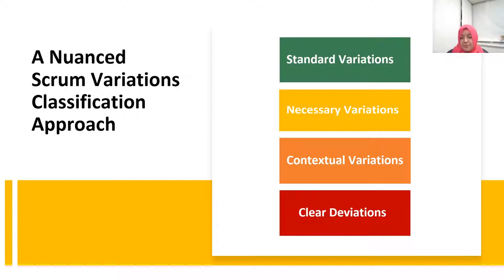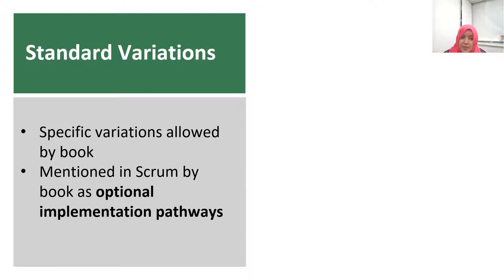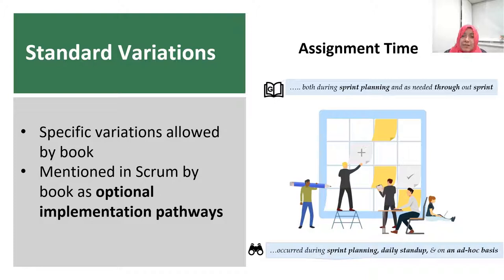Standard variations are specific variations allowed by the books, mentioned as optional implementation pathways. One example is task assignment time. The Scrum Guide states that work assignment can occur both during sprint planning and as needed throughout the sprint. In practice, assignment occurs during sprint planning meetings, daily stand-ups, and on an ad-hoc basis throughout the sprint.